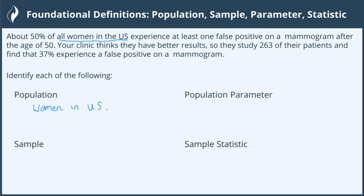From that, what is our sample? The sample is the smaller subset that is being studied. In this case, the smaller subset or sample is the 263 patients at the clinic. So our sample is the 263 patients at wherever your clinic is.